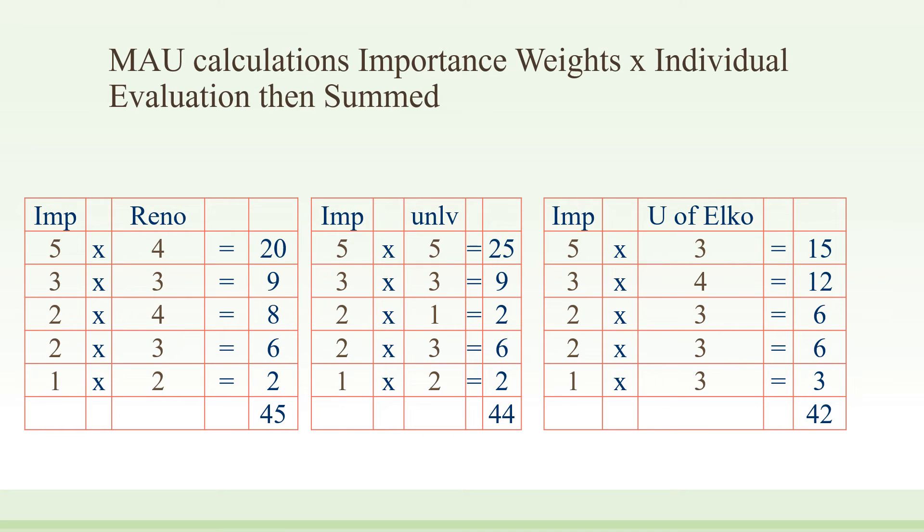So what would you do? UNLV has two choices here. One alternative would be to do a better job of placement and promoting our ability to place students. That would hopefully change our number from one to two, three, or four, resulting in a higher score and being more preferred.